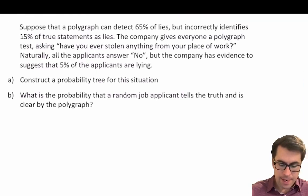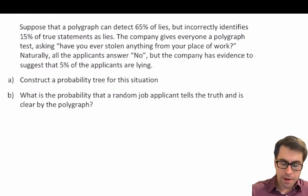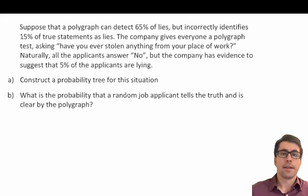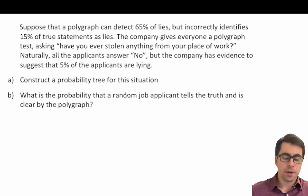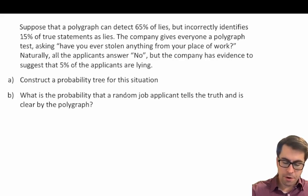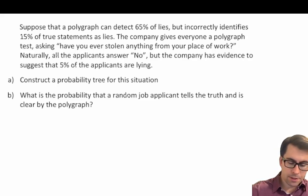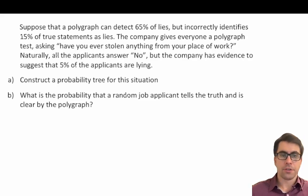Suppose a polygraph can detect 65% of lies but incorrectly identifies 15% of true statements as lies. The company gives everyone a polygraph test asking 'have you ever stolen anything from your place of work?' Naturally all applicants answer no, but the company has evidence to suggest that 5% of applicants are lying, and what they're asking us to do is construct a probability tree for this situation.